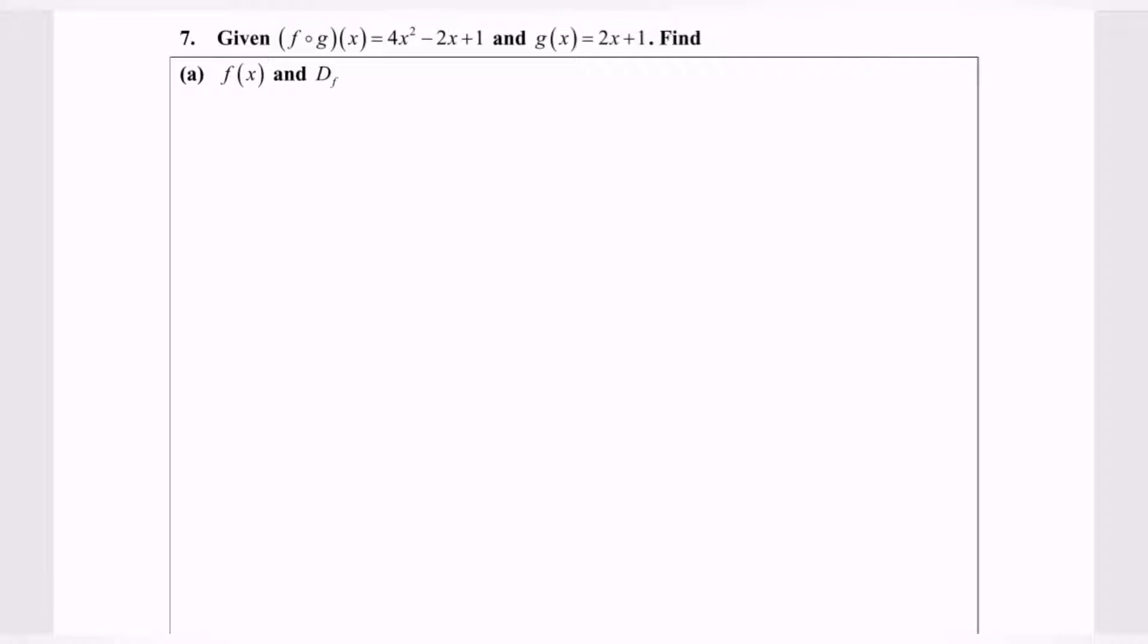Hello everyone. In this video I'm going to discuss an example for composite functions. Given f∘g(x) = 4x² - 2x + 1 and g(x) = 2x + 1, find f(x) and the domain of f.